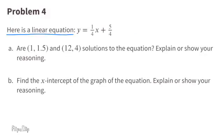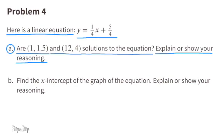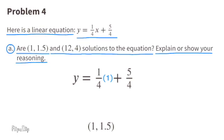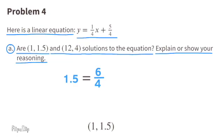Problem number four: here is a linear equation y equals 1 fourth x plus 5 fourths. Part a: are points (1, 1.5) and (12, 4) solutions to the equation? Substitute x with 1 and y with 1.5: 1 fourth times 1 is 1 fourth. 1 fourth plus 5 fourths equals 6 fourths, and 6 divided by 4 equals 1.5. Since 1.5 equals 1.5, yes, these points are a solution.